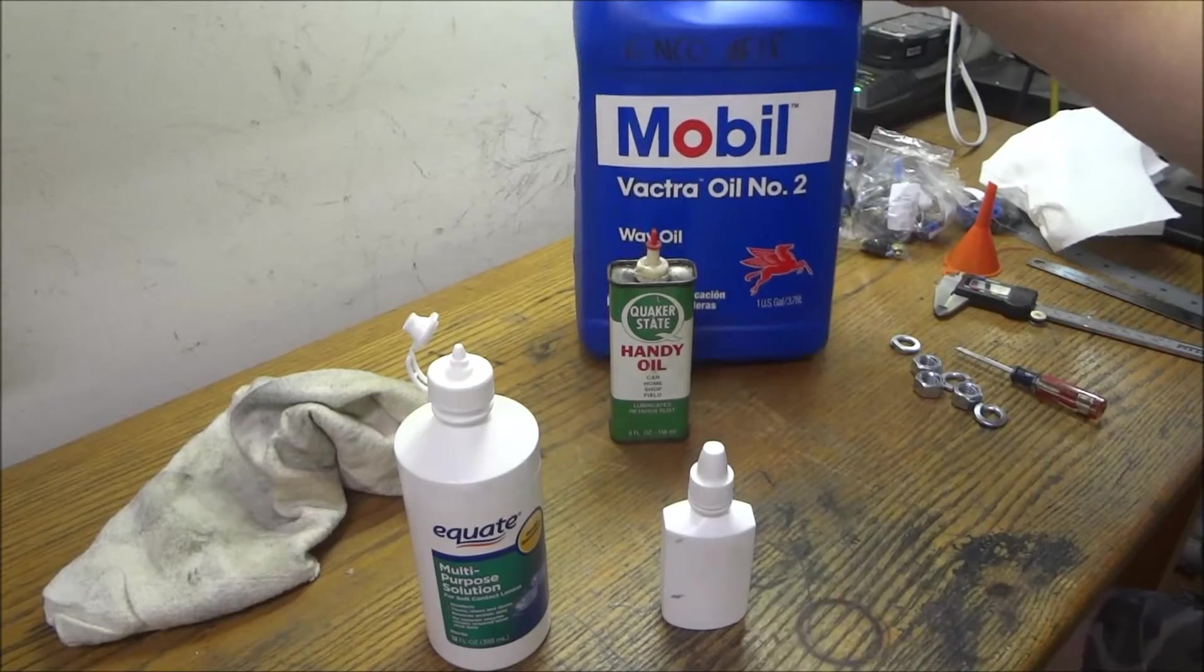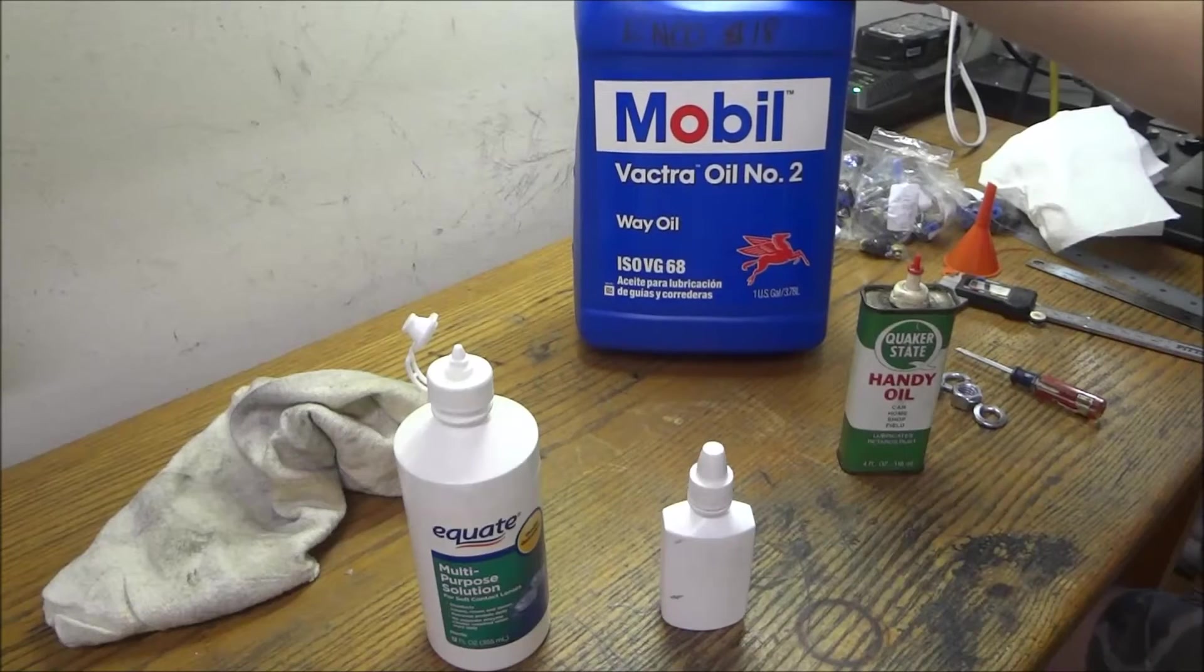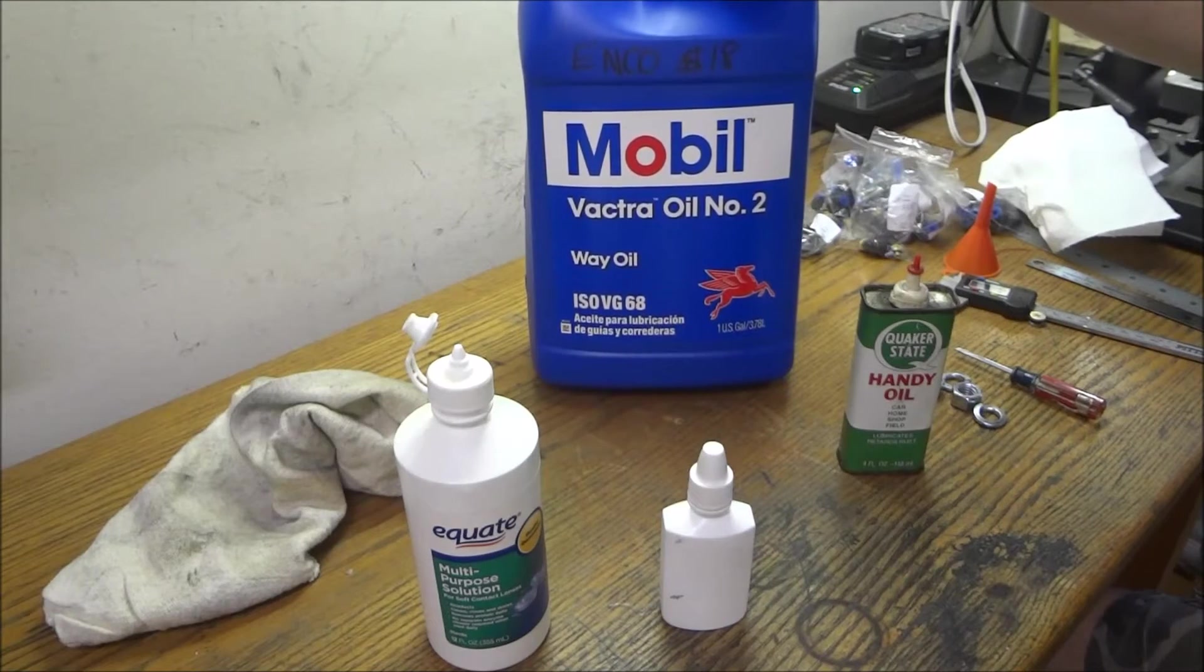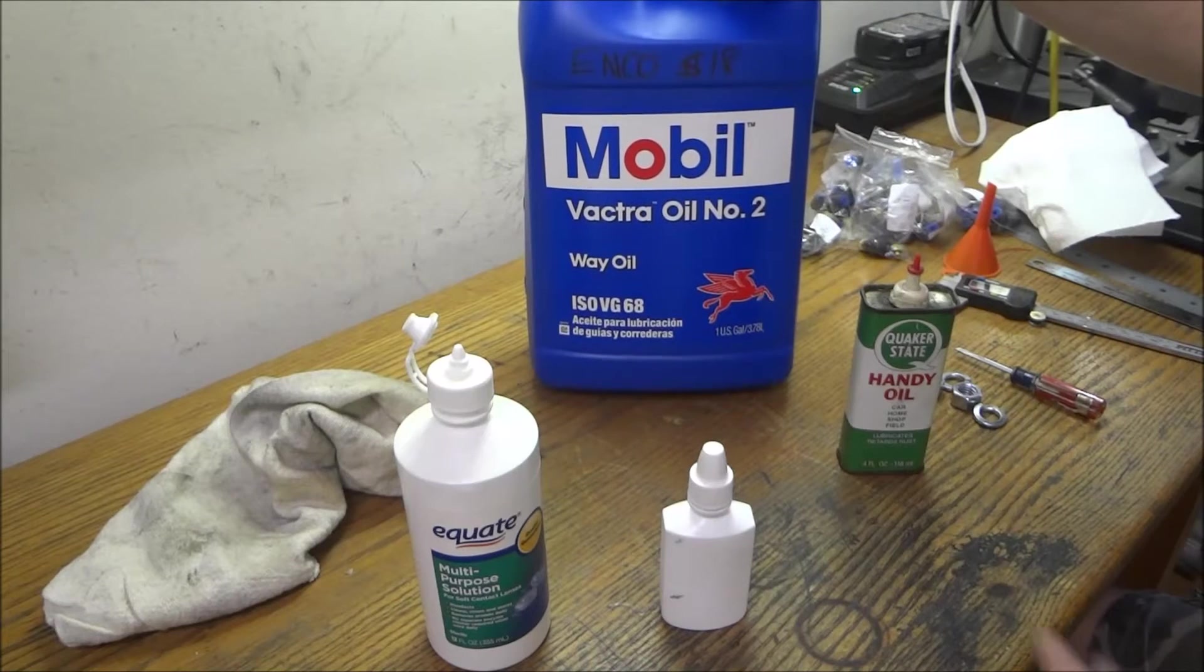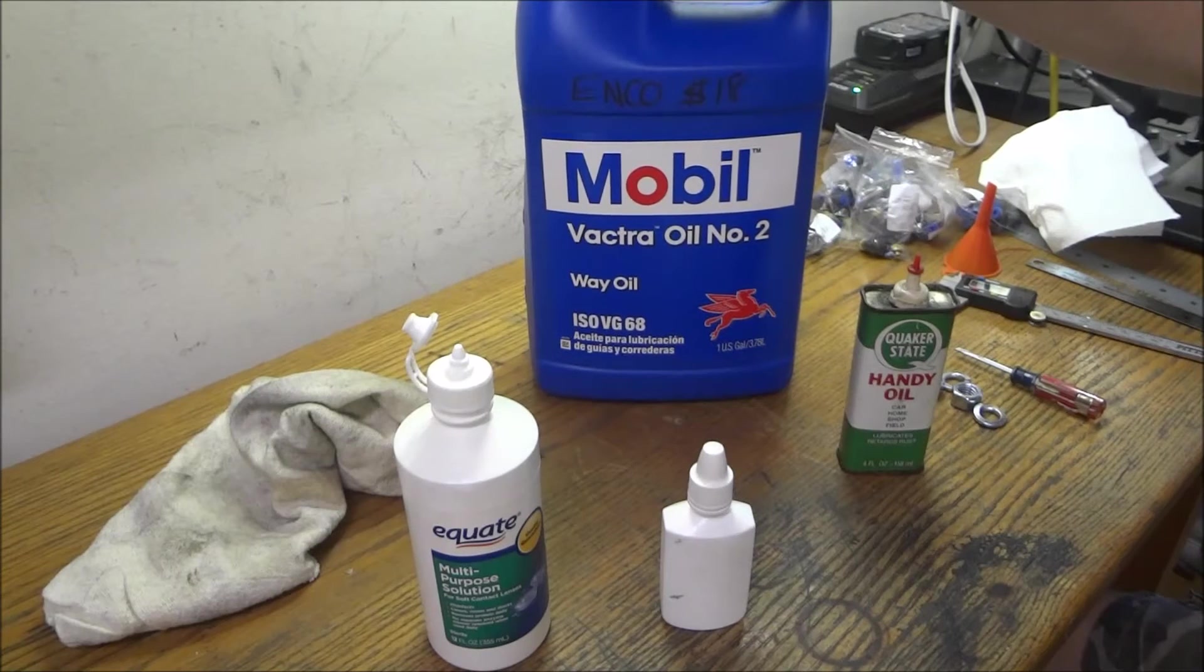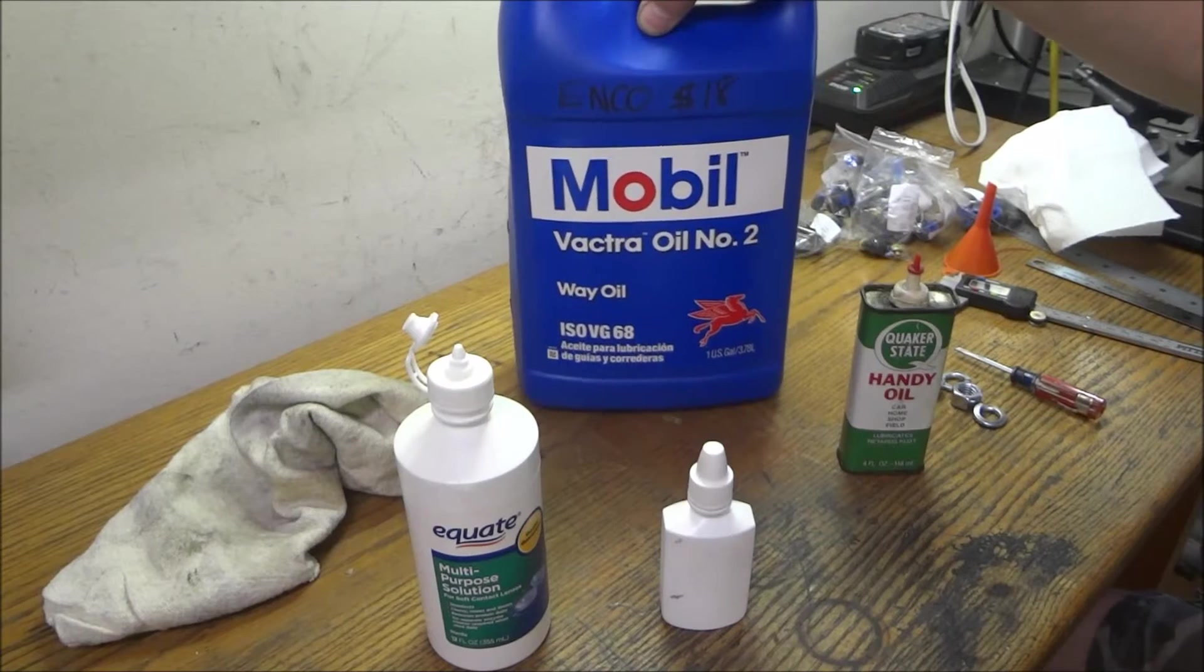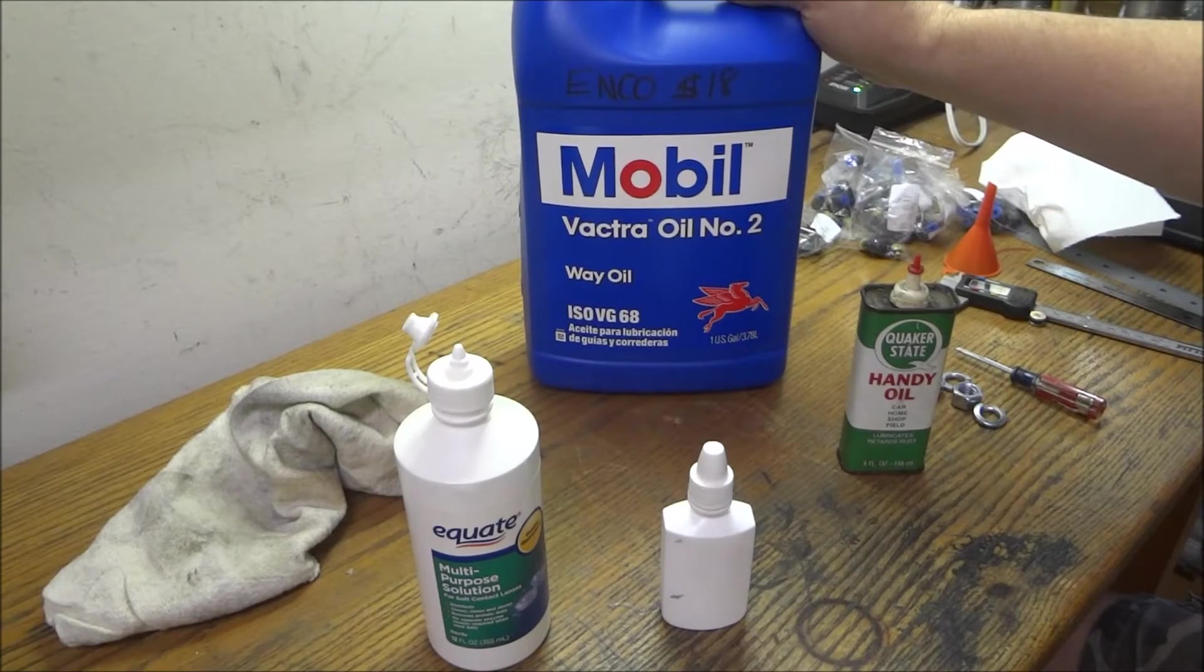I picked up some Mobil Vactra oil, this is number two. This is an ISO 68 oil which after doing some research I found is just SAE 20 oil, however it does have different agents in there - some thickening agents to help stick to the ways. I suggest you go ahead and pick this up, it's not too expensive. I found this at ENCO for $18, I've seen it as high as $30 a gallon. They had this on sale, really good deal, so if you need to pick some up check out ENCO.